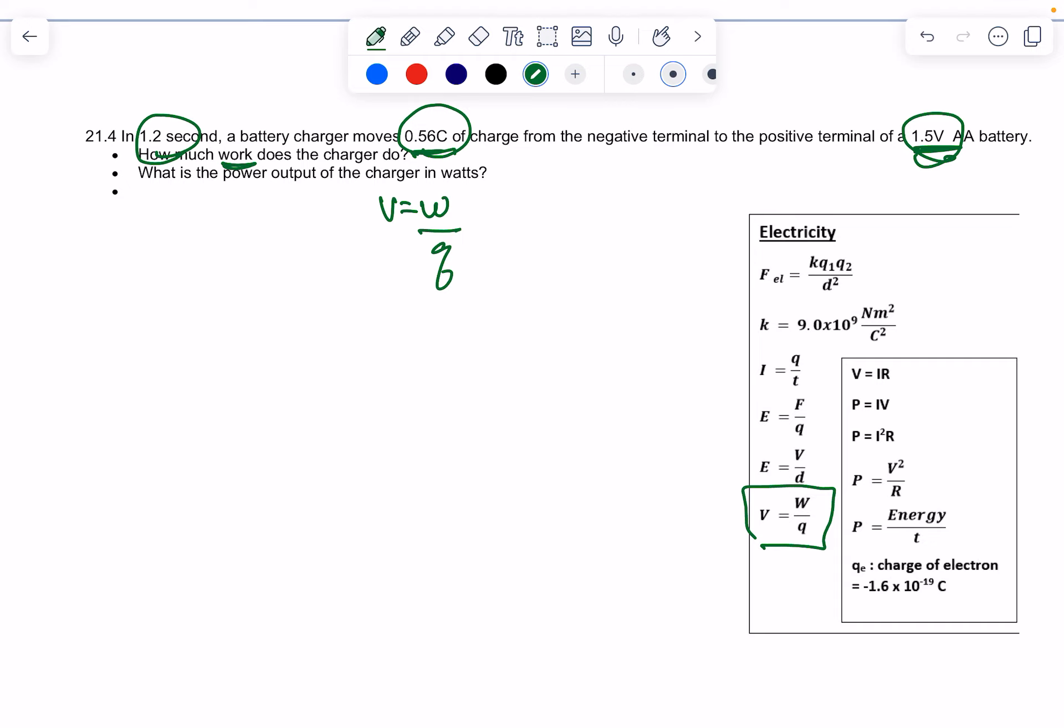So once you solve for the work, power, just from previous things, is work divided by time, basically energy divided by time. So once you find work that goes here, looks like you have 1.2 seconds, you're simply going to divide.